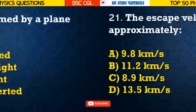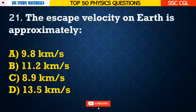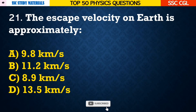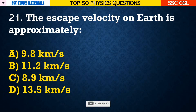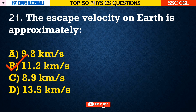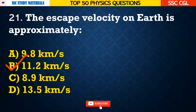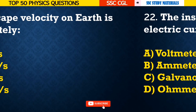Question number 21: The escape velocity on earth is approximately — Answer B. It is approximately 11.2 km per second.